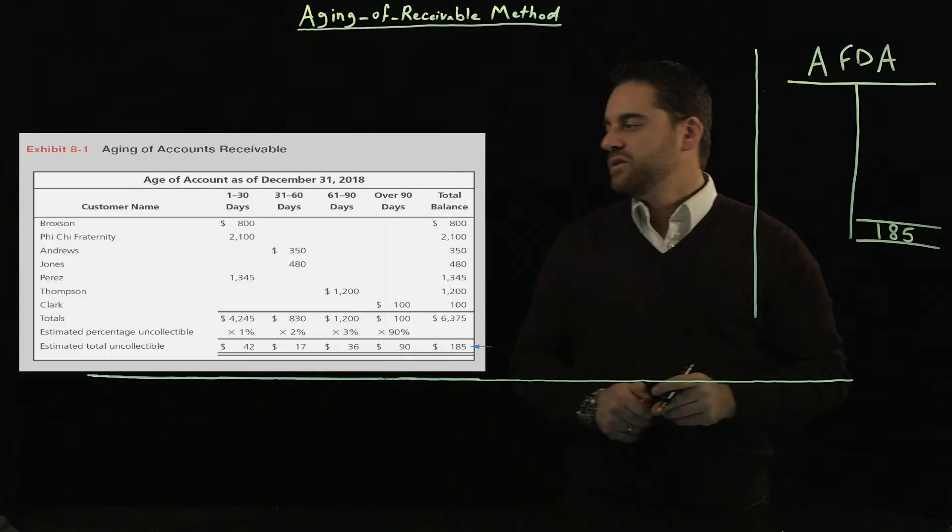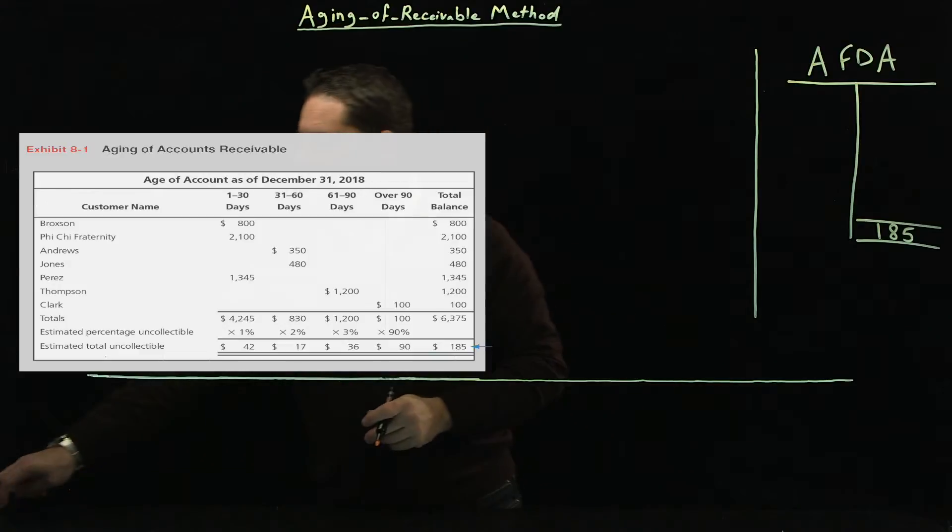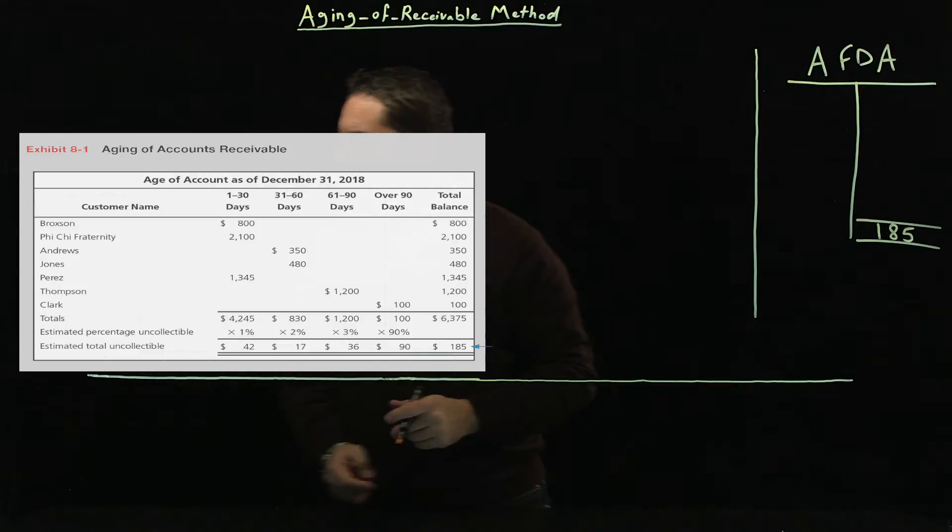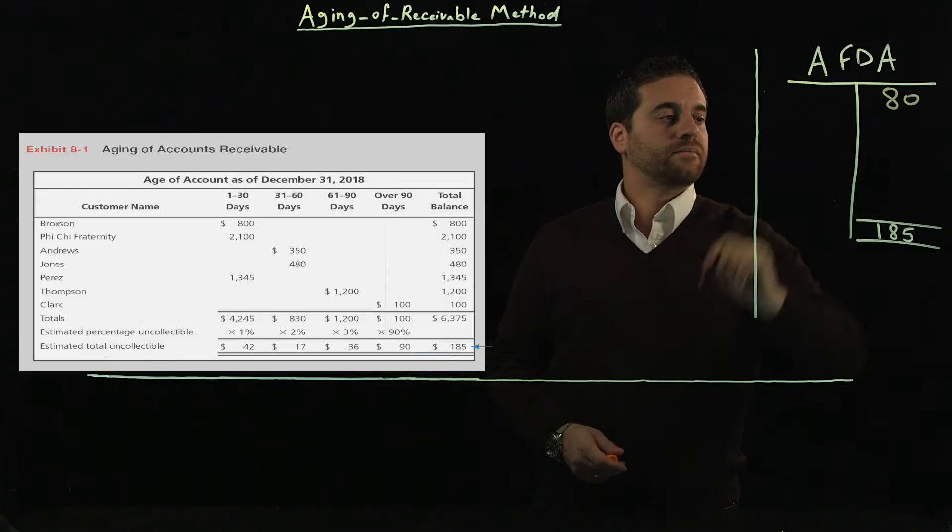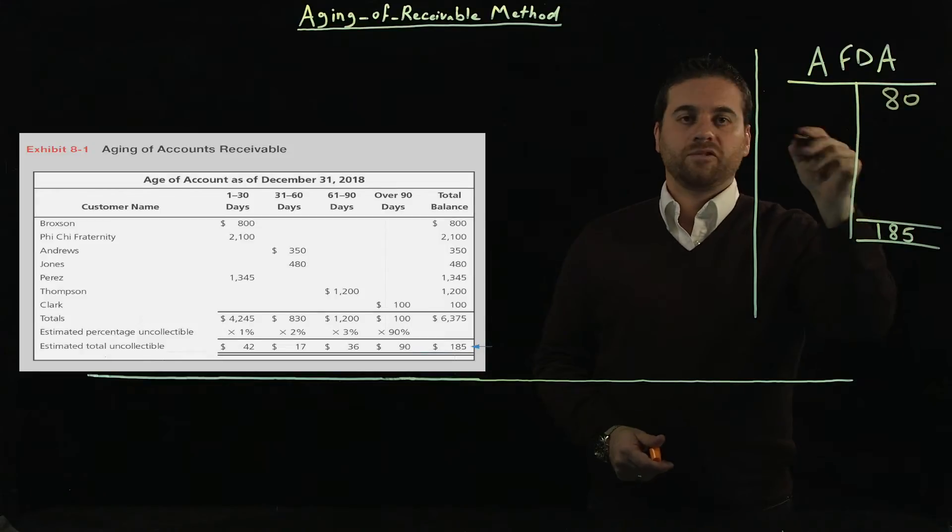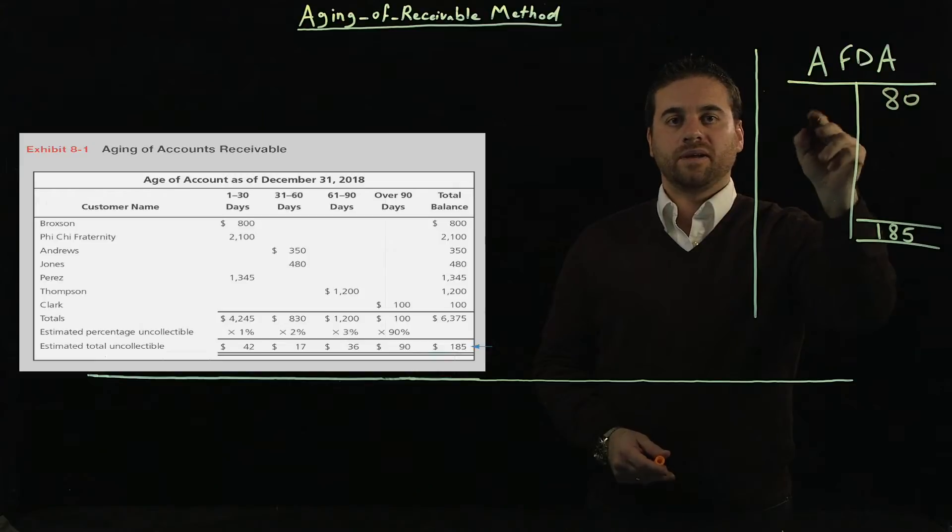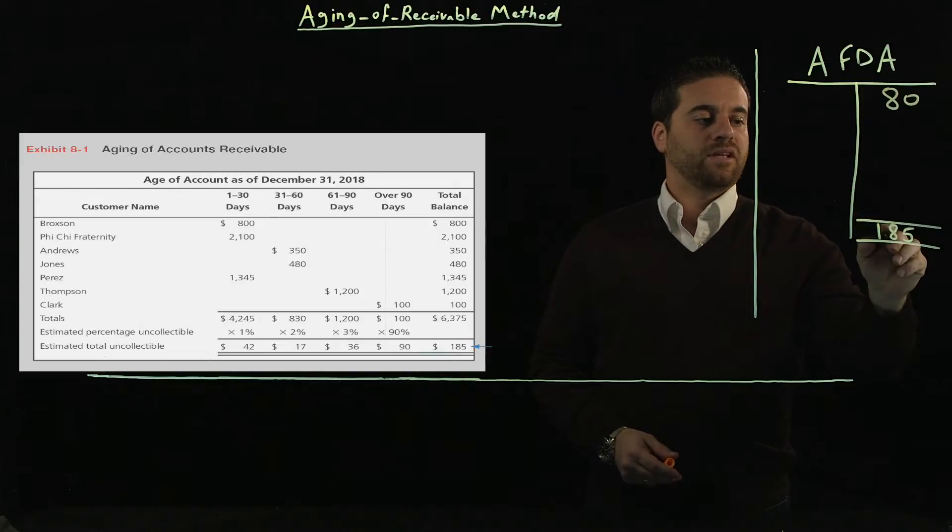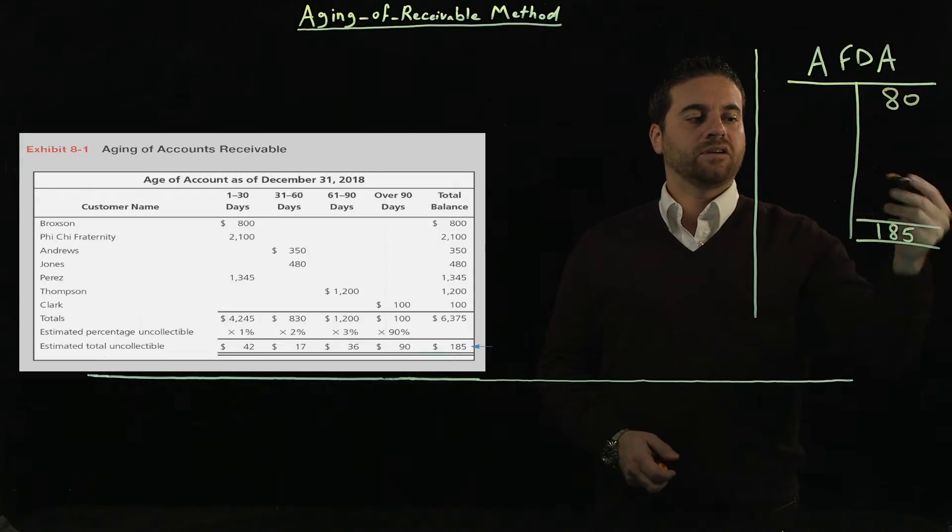We have to find out what was the beginning balance or the unadjusted balance for AFDA before we came up with the 185. So let's assume that it was $80. And then if there was no write-off during the period, which would be a debit balance here, then we just have to do 185 minus 80, which is going to be 105.